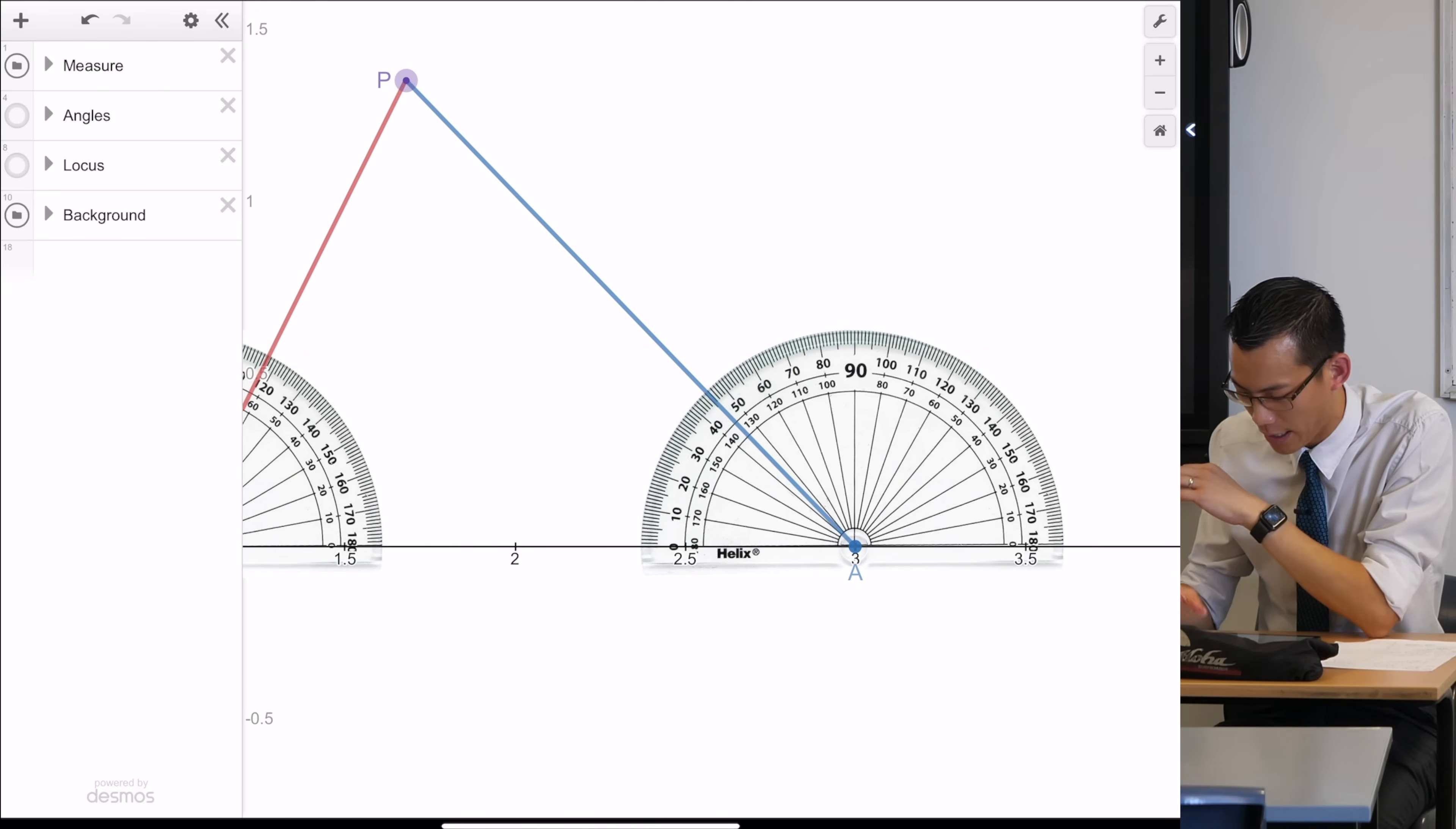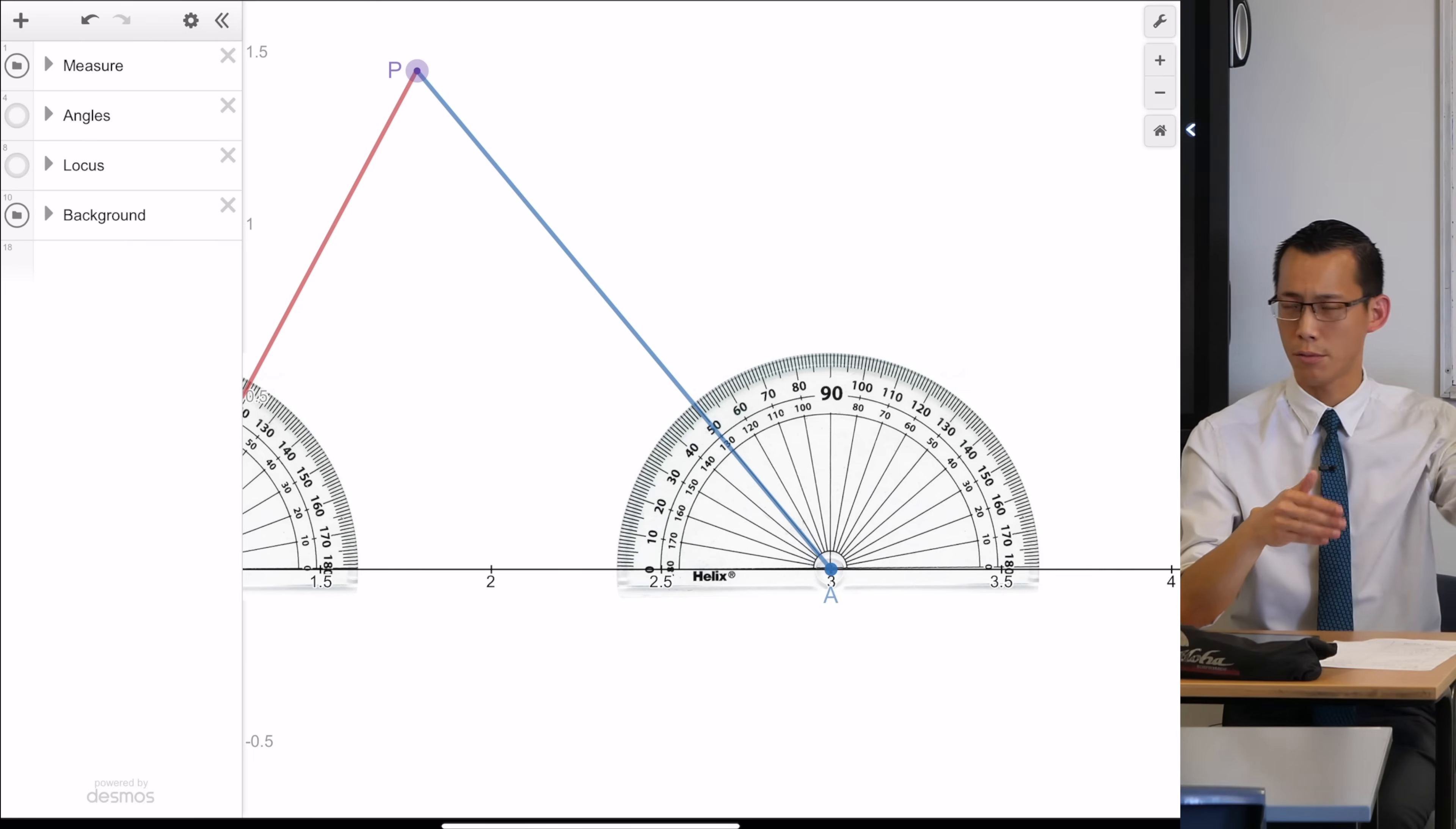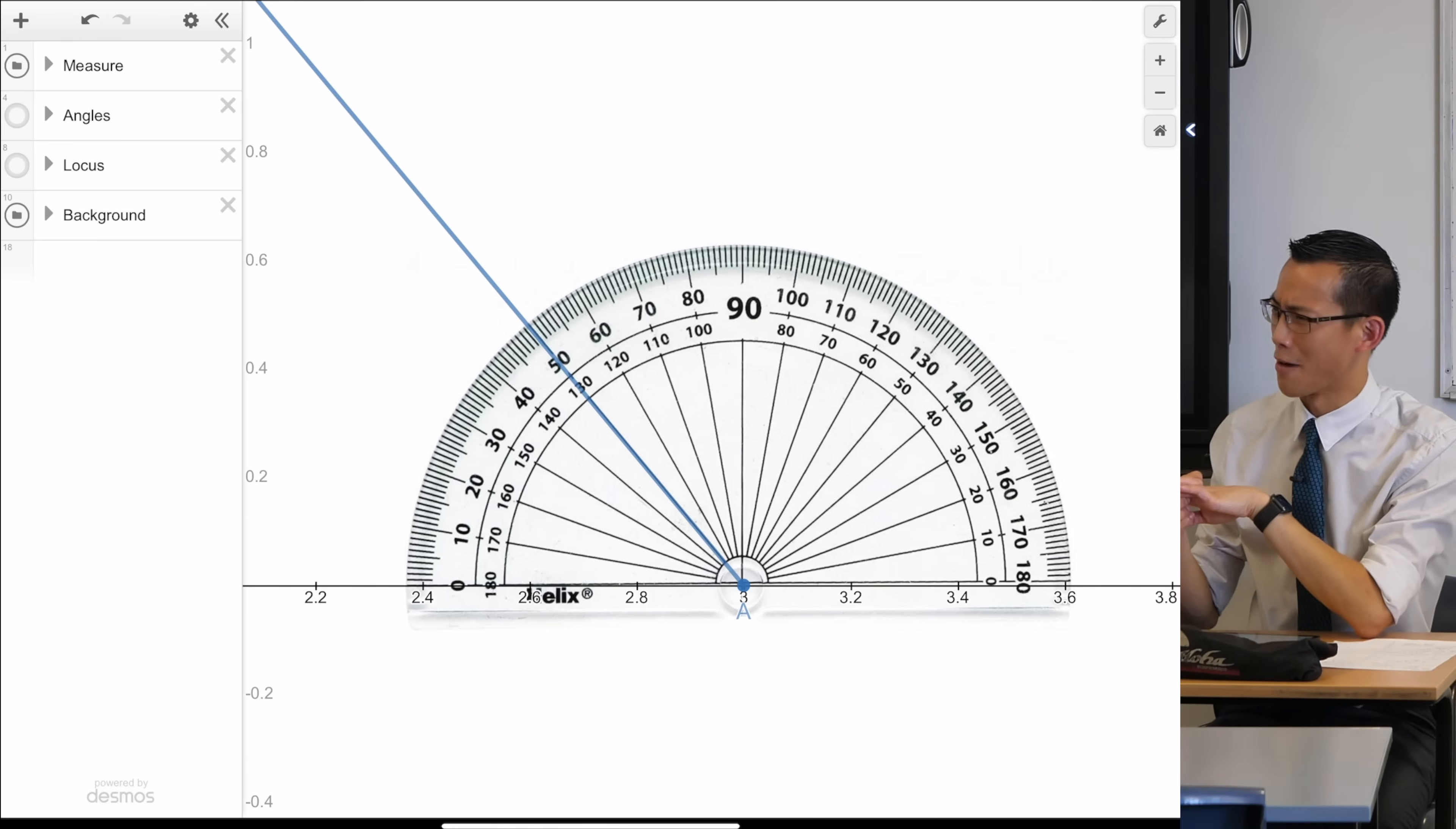If I just look over here at this side, if I put p somewhere like this, have a look at the argument of z minus three. It's an obtuse angle. We measure from the positive direction of the real axis, and then we measure anticlockwise. Can you read the angle off there? This is 130 degrees. I couldn't find a protractor in radians, so we're just going to have to deal with degrees for a little bit.